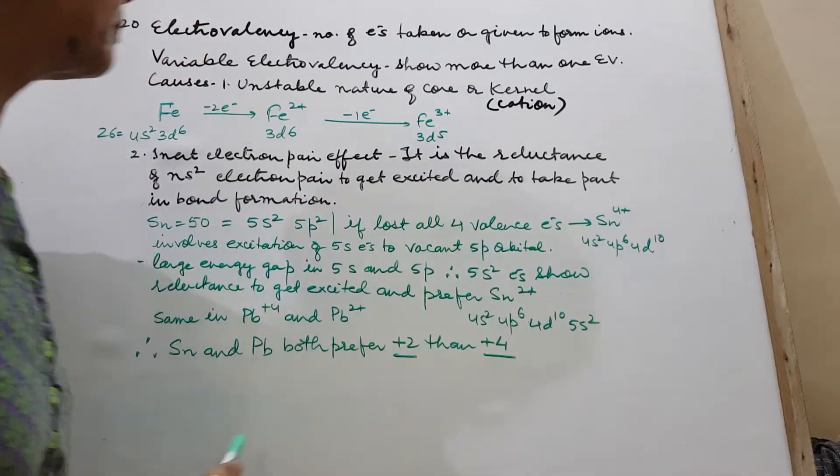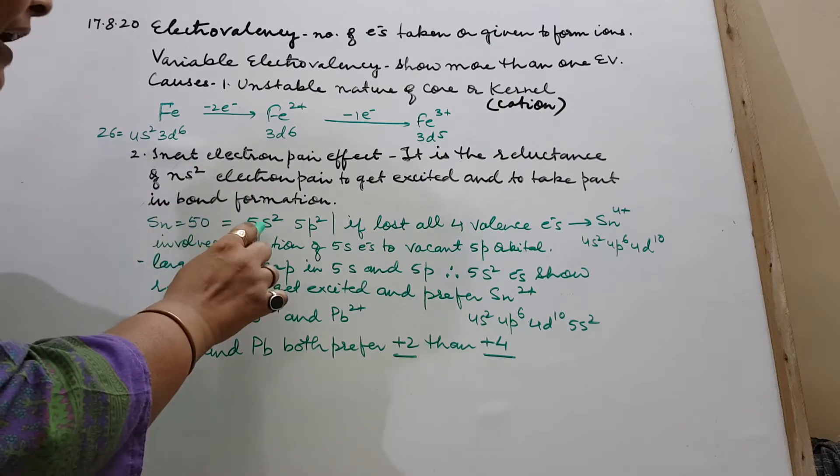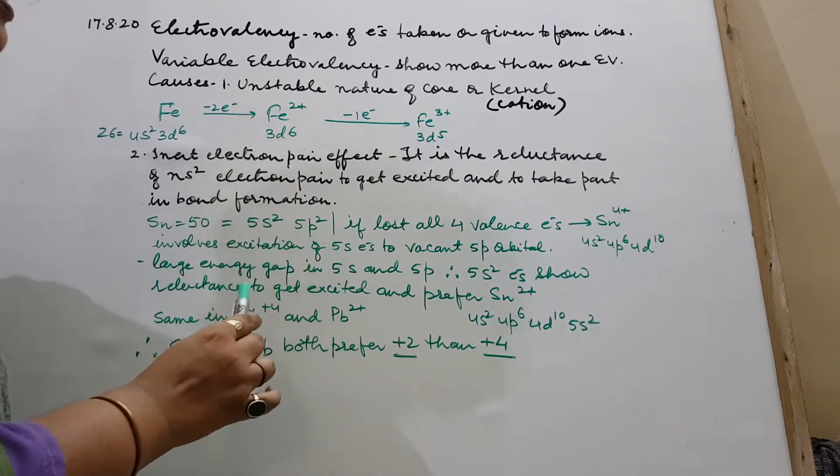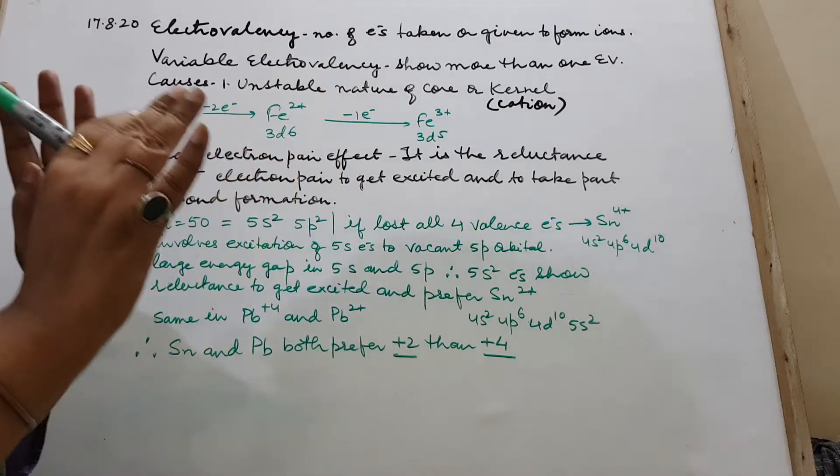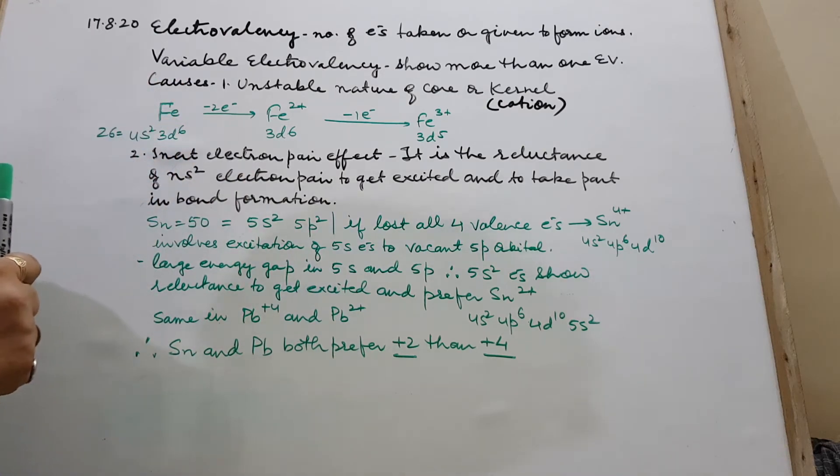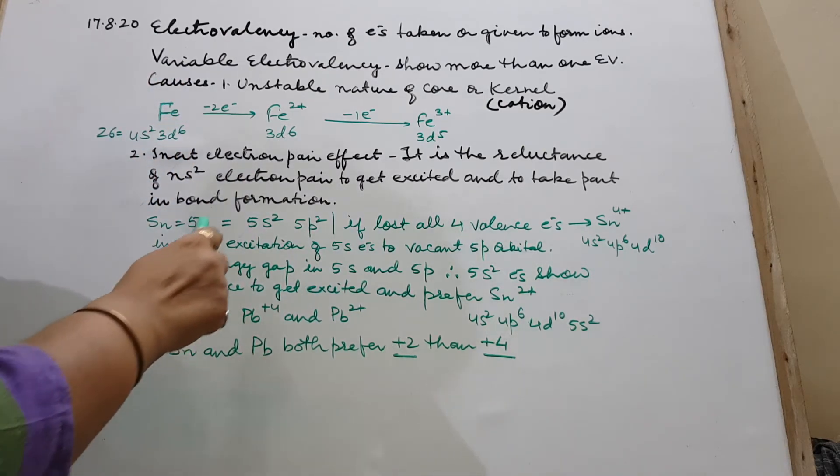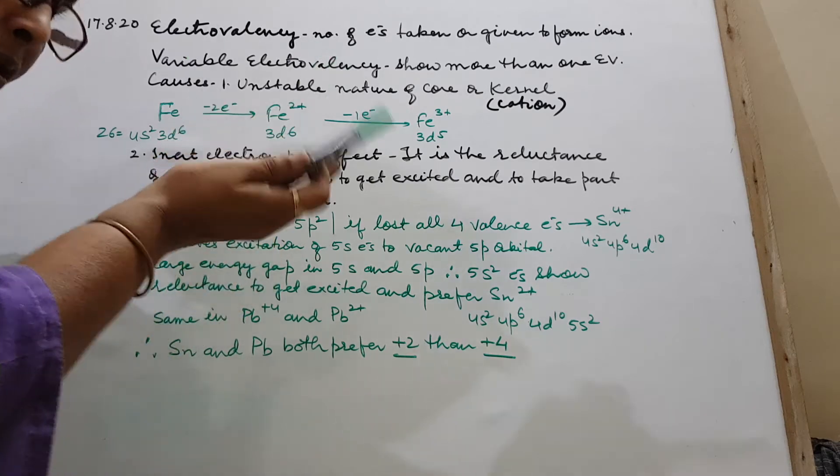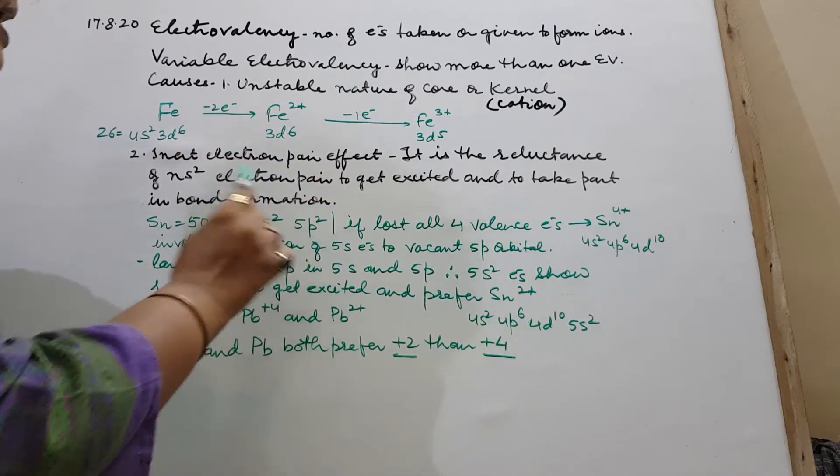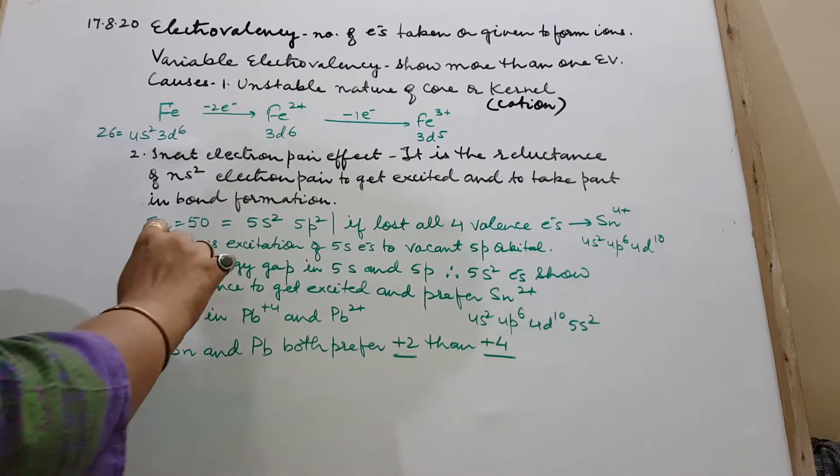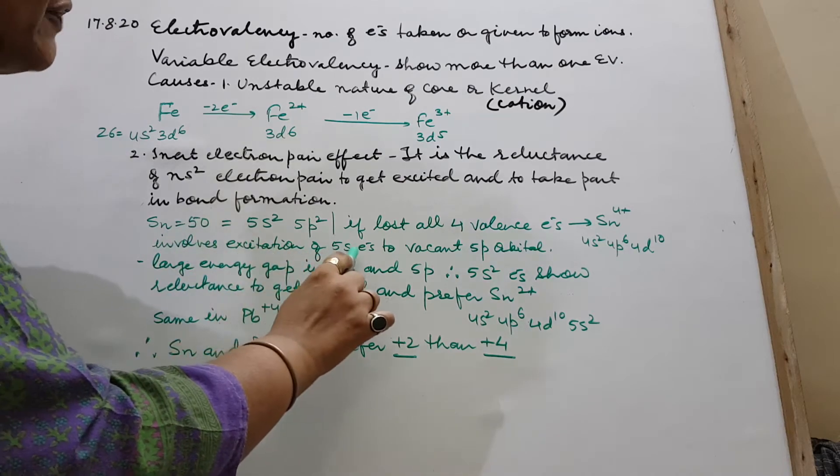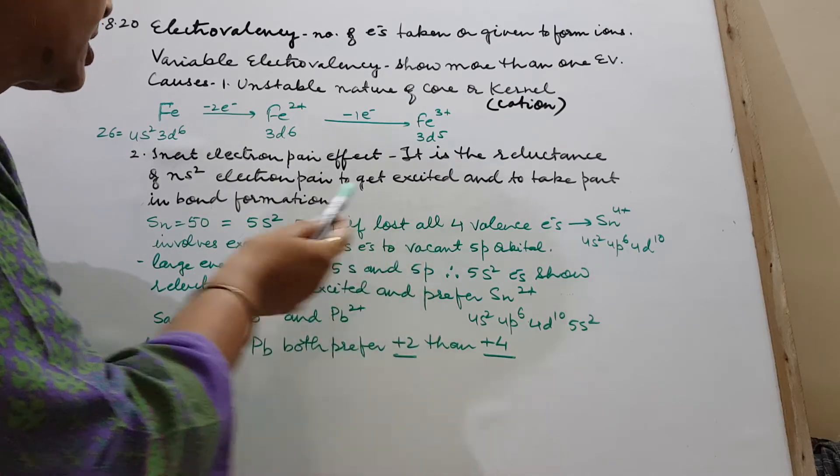In the formation of Sn4+, what happened? 5s2 as well as 5p2, all electrons were released. But it was seen, what happened? There is a good energy gap between 5s and 5p.